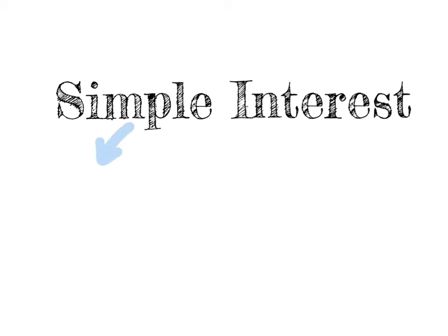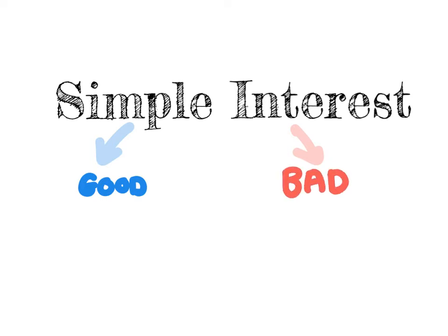Let's have a look at simple interest. Firstly, it's important to note that we get two different types of interest. Basically, good interest — that's when you put money into the bank and the bank gives you a reward for investing the money with them. And secondly, we get bad interest. That is when we loan money from the bank and we are basically punished for loaning money from the bank. This is in very simple terms.